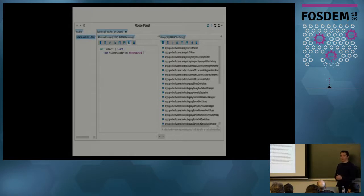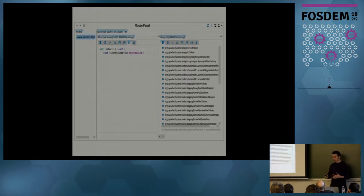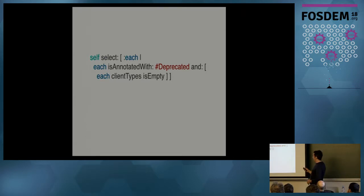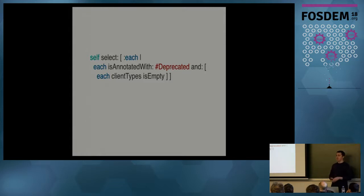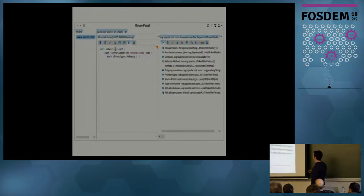Now, can we remove them? No, because they might be used. We could go to every one of these and check if the list of classes calling it is zero, but we don't want to do that 36 times. Instead, we update our query to add another condition: that the client types list is empty. For each class, we can ask what are the client types — the classes using it. If we run this, we get one result: one single class with no clients. That we can remove. Now changing the query to not empty, we get the remaining 35 classes.